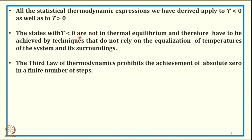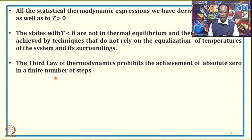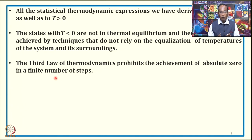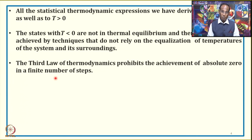The third law of thermodynamics prohibits achievement of absolute zero in a finite number of steps. This is a good time to revisit the third law of thermodynamics. It states that the entropy of each substance is positive, may become zero, and does become zero at absolute zero for perfectly crystalline substances. An alternate form is that it is impossible to achieve absolute zero in a finite number of steps.